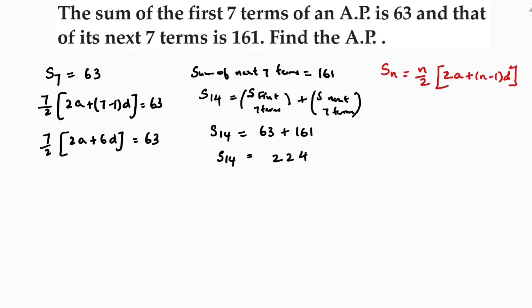Now if I will substitute in the formula, 7 by 2 into 2a plus 6d is 63. Just cancel with 7, 7 times 1 is 7, 7 times 9 is 63. If I will cross multiply this 2, 2a plus 6d is 18. This is equation 1.